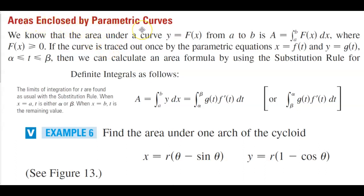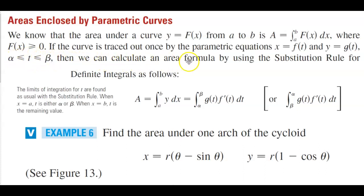Areas enclosed by parametric curves. We know that the area under a curve y = f(x) from a to b, where that function is greater than or equal to zero. If the curve is traced out once by parametric equations where x = f(t) and y = g(t), with t between alpha and beta, then we can calculate an area formula using the substitution rule.